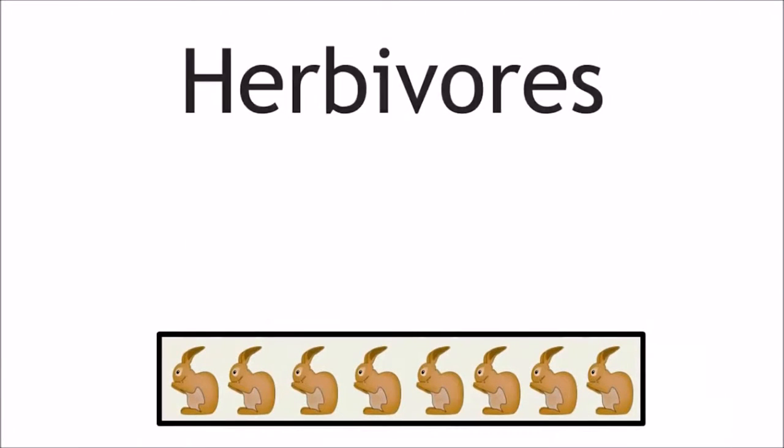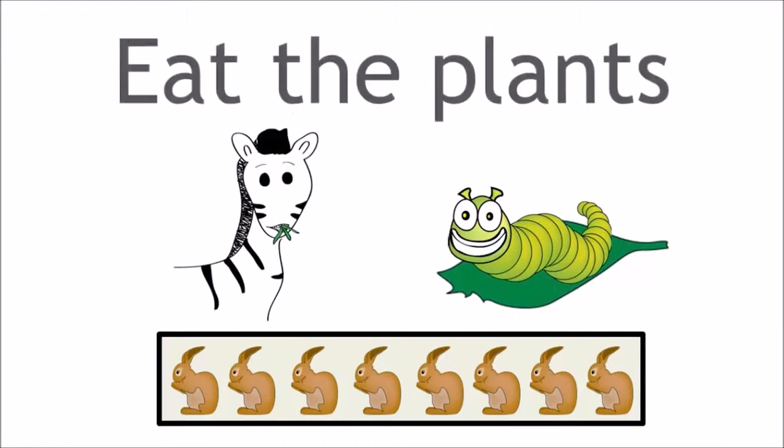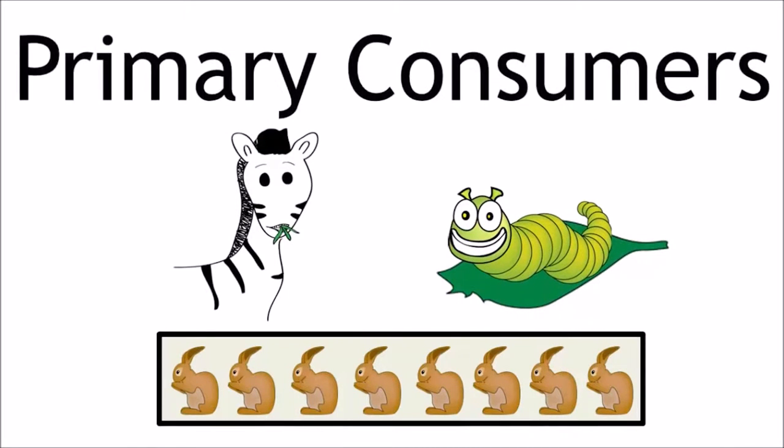From the producers, the second trophic level is the herbivores, the organisms that eat the plants. These organisms are called the primary consumers. They are the first step when nutrients are consumed.